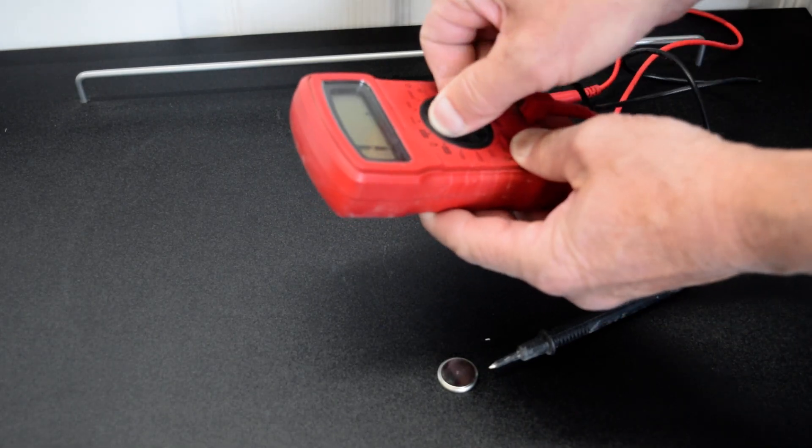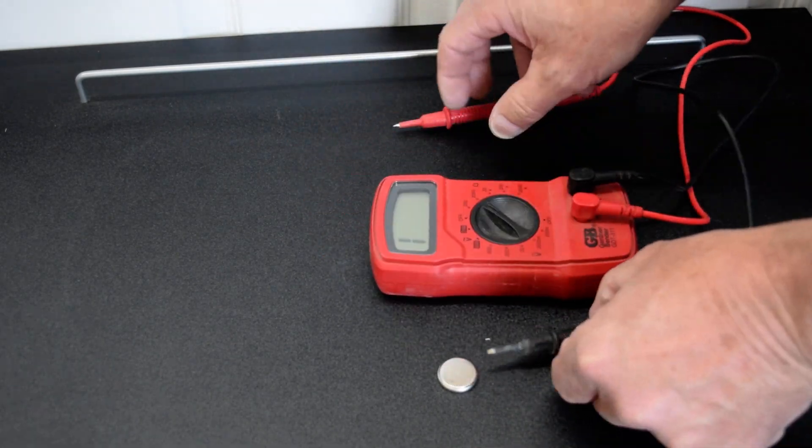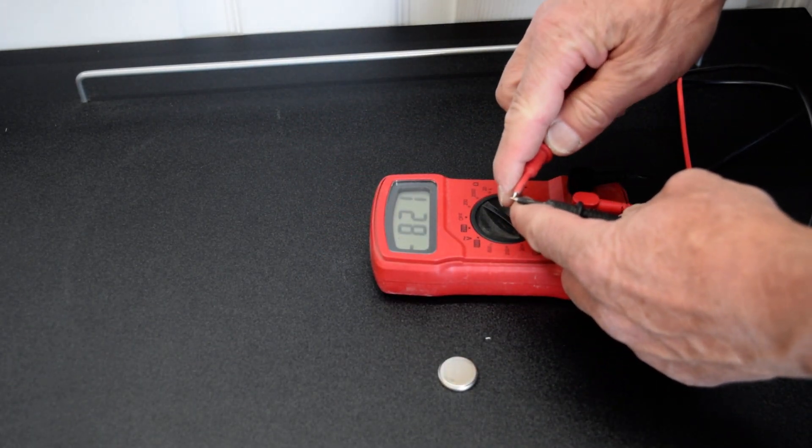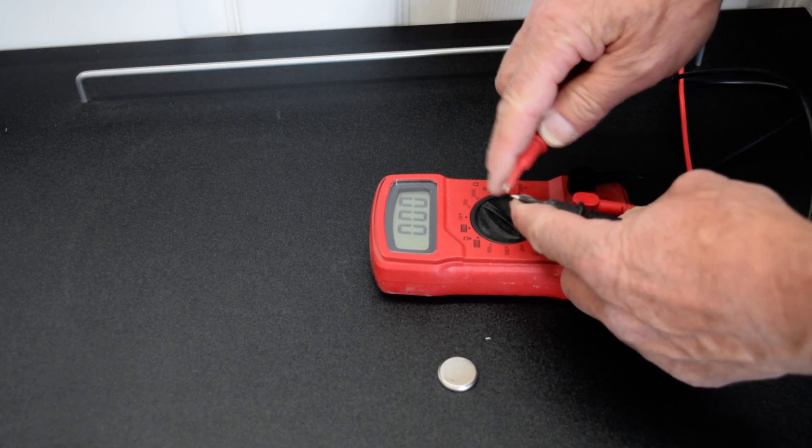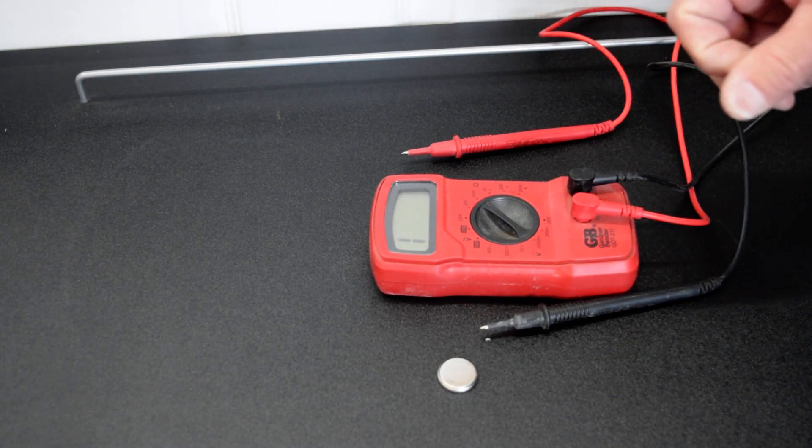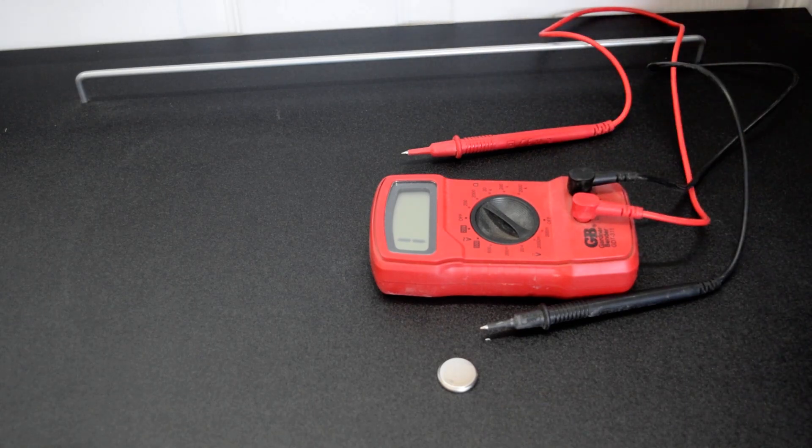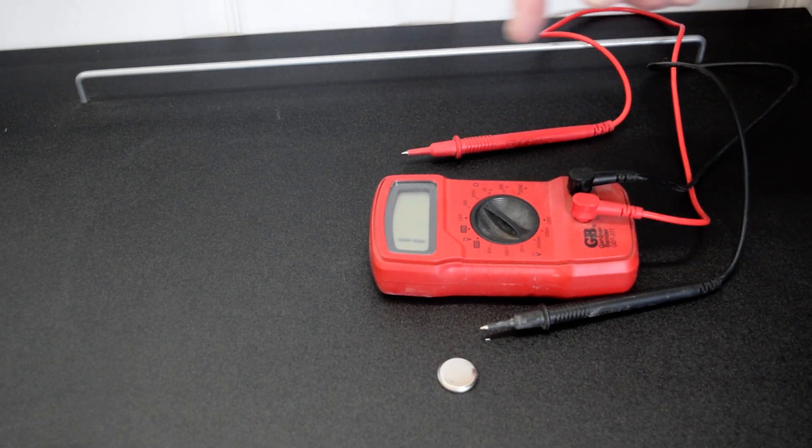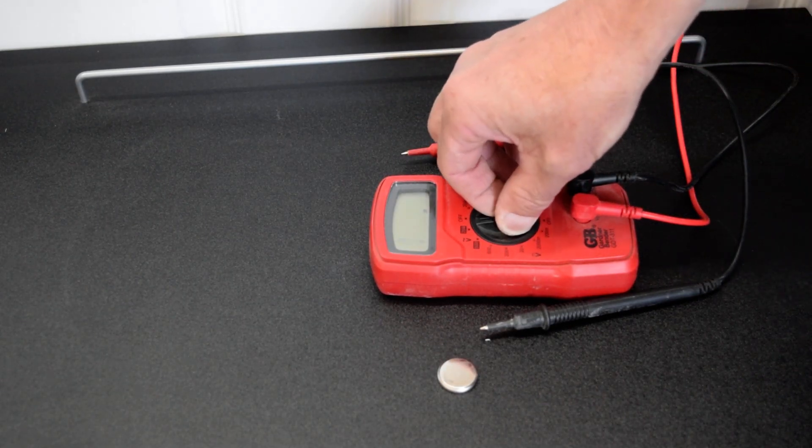And then there's also ohms over on this side, which basically tests your resistance. The way to check if something, the wire's good or whatnot, you can put it on the ohm setting and it'll zero out.